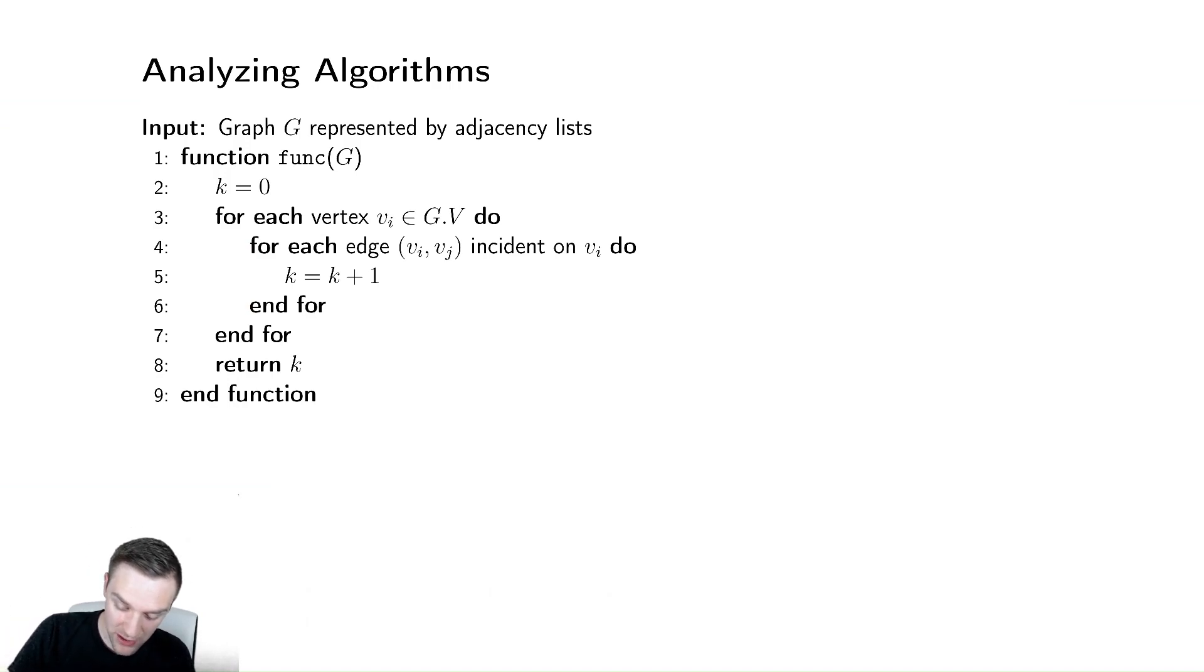So every single iteration, I add 1 to k. So rather than saying that this costs c like we normally would, what if we pretended instead that it costs 1? This would allow us to compute the value of k. So k is equal to the sum, I have a for loop, but I want to write that as a sum, but it's a little strange. Let's introduce some variables to help us out.